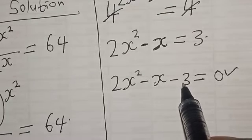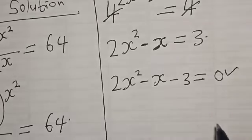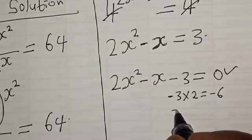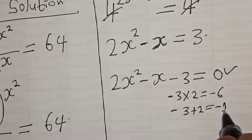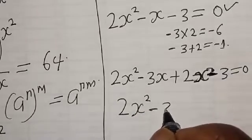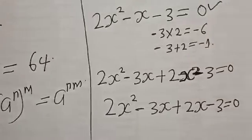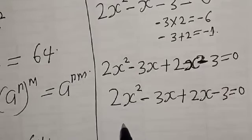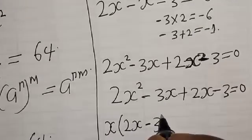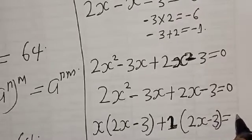We multiply the coefficient 2 by 3 to get minus 6. Then we look for two numbers whose product equals minus 6 and whose sum equals minus 1. Those numbers are minus 3 and plus 2, since minus 3 multiplied by 2 is minus 6, and minus 3 plus 2 equals minus 1. So we split the middle term: 2s squared minus 3s plus 2s minus 3 equals 0.